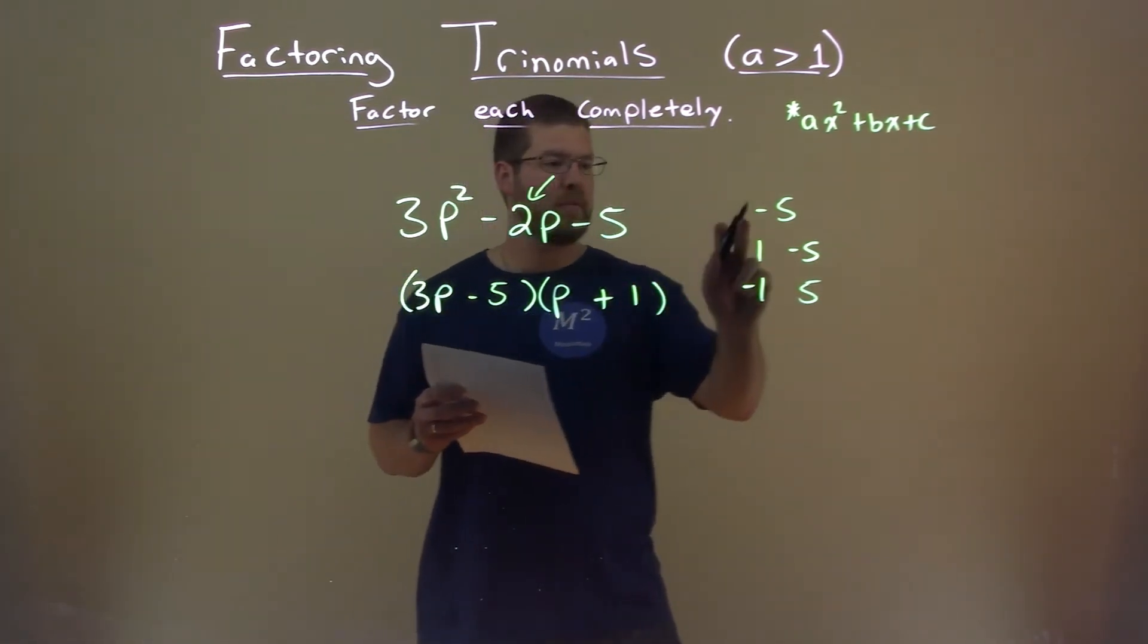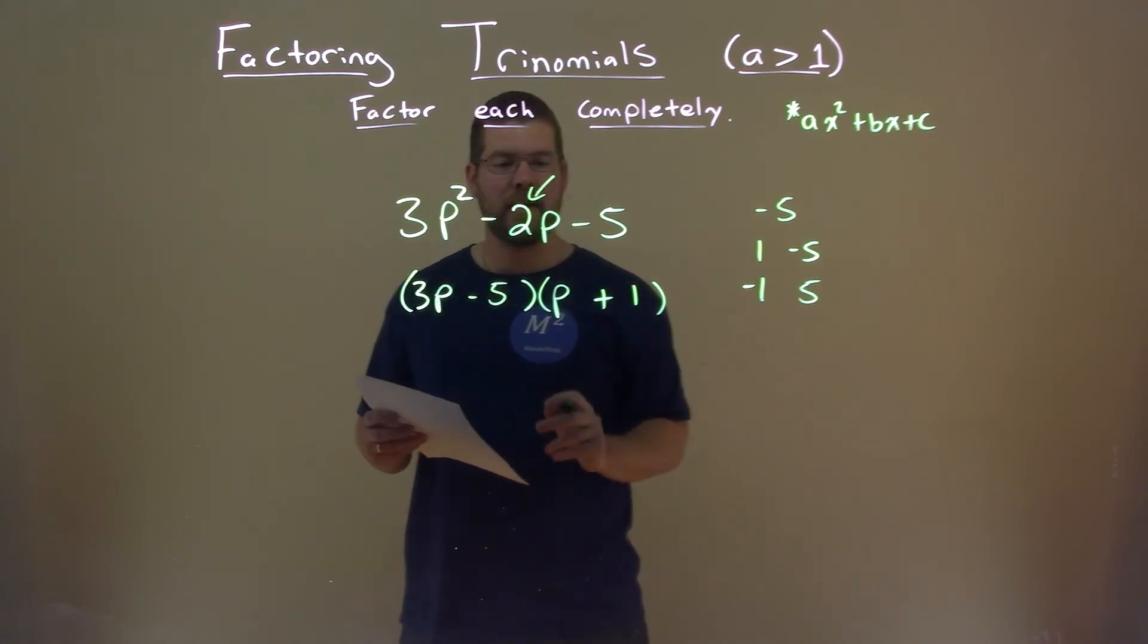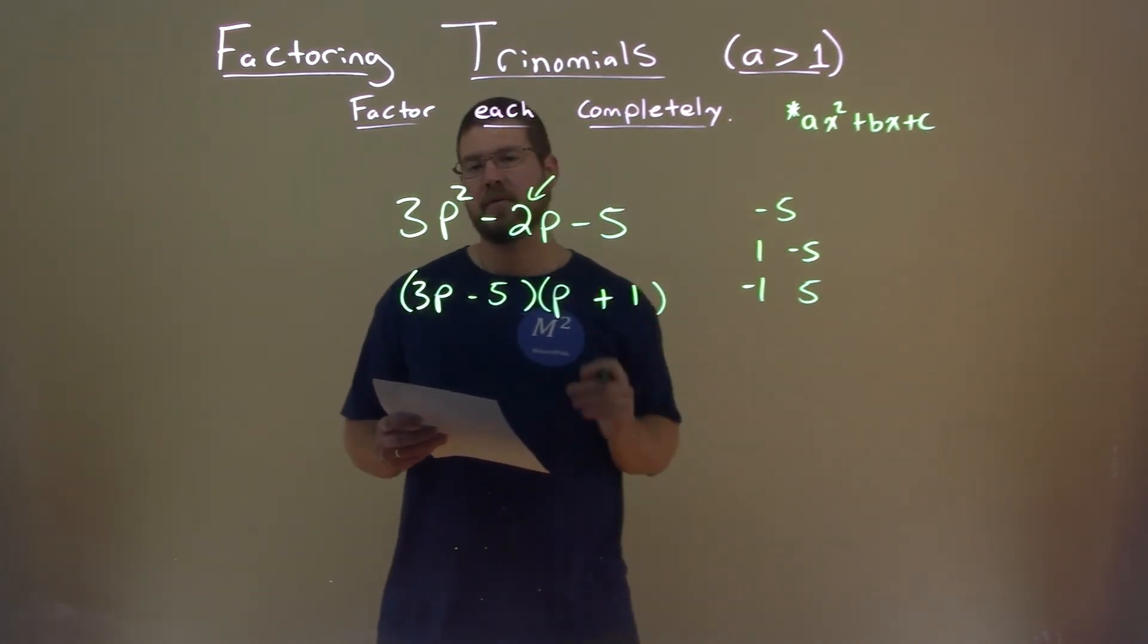So we try to think: 3 times one of these numbers plus the other number gets me negative 2, and that's going to be 3p minus 5, multiplied by p plus 1.